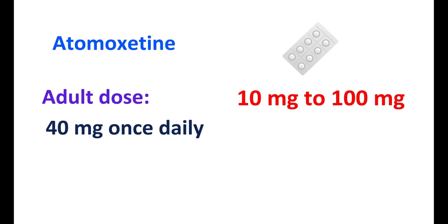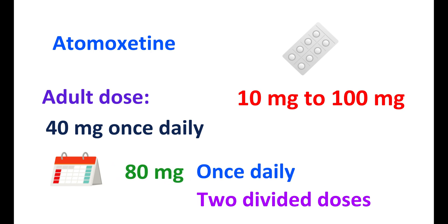The adult dose of Atomoxetine for the treatment of ADHD starts from 40 mg given once daily. At least after three days of therapy, the dose may be increased to 80 mg given once daily or it can be given as two divided doses. The dose increments can also be done after few weeks of treatment to a maximum dose of 100 mg per day.